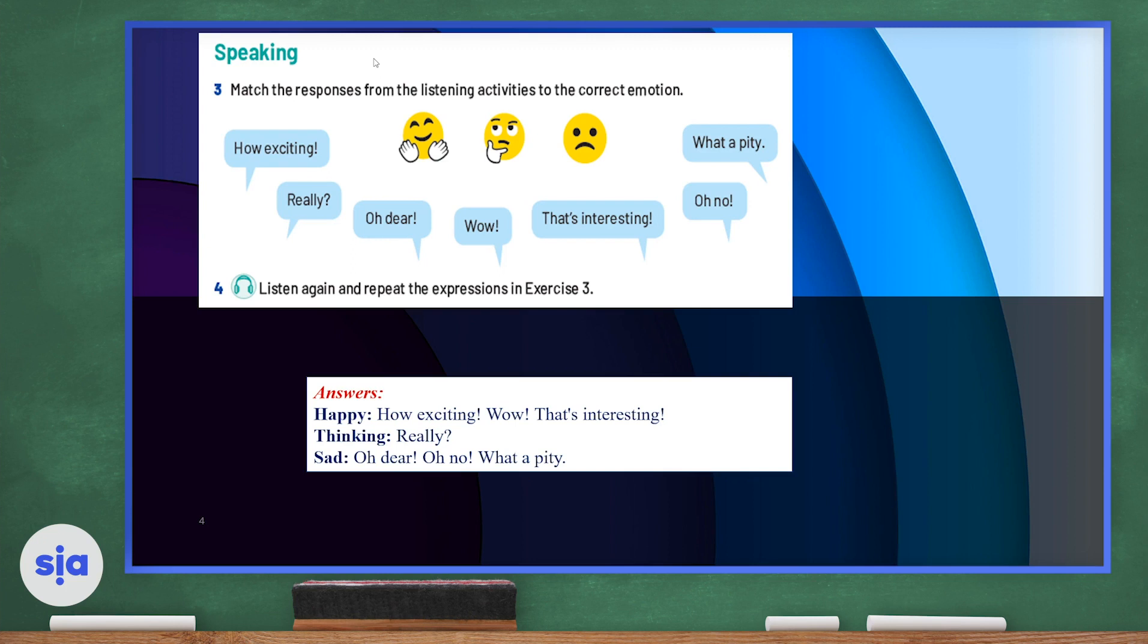Now you can listen again and repeat the expressions in the exercise. Remember when to use each expression. You can show happiness and excitement by saying 'how exciting,' 'wow,' or 'that's interesting.' You can show that you're thinking or that you're very surprised by saying 'really,' and you can show sadness by saying 'oh dear,' or 'oh no,' or 'what a pity.'